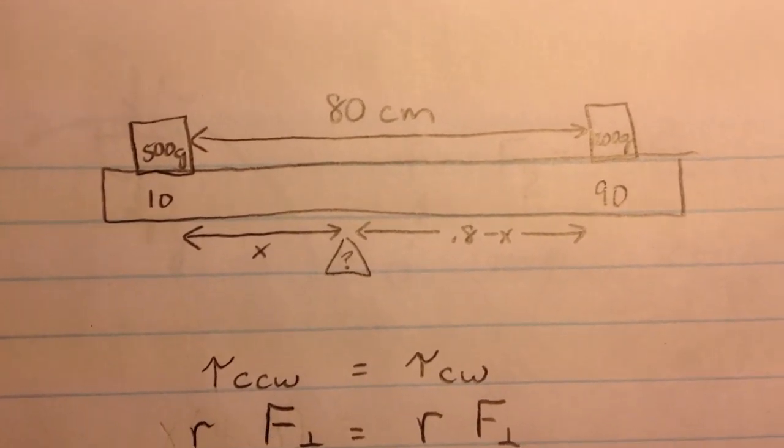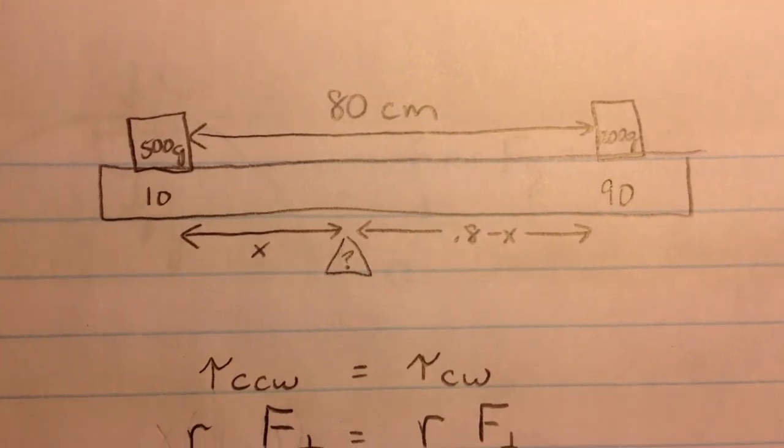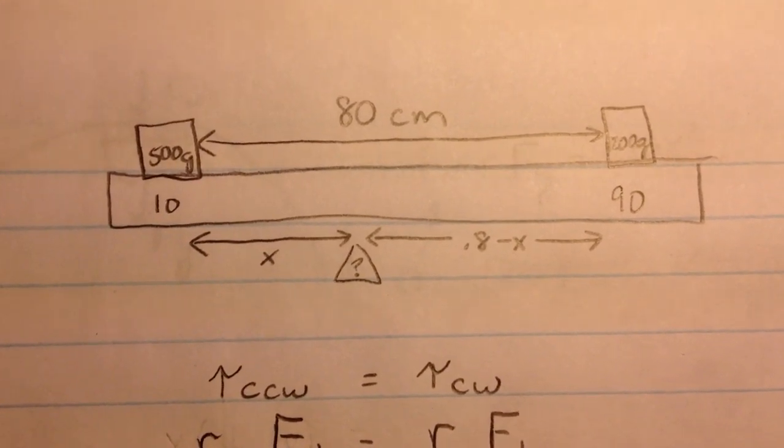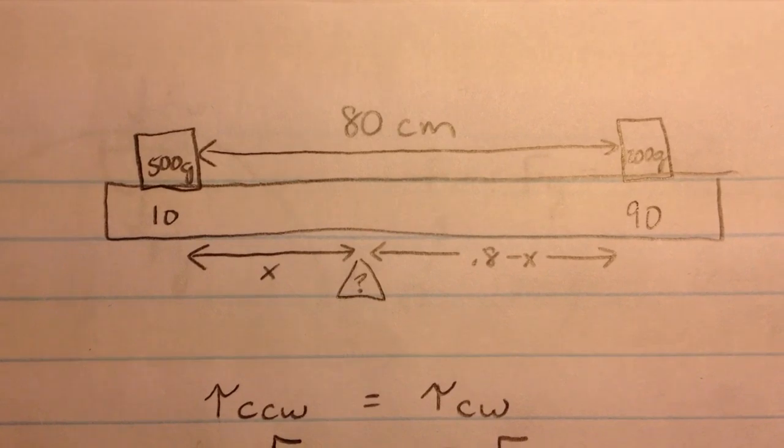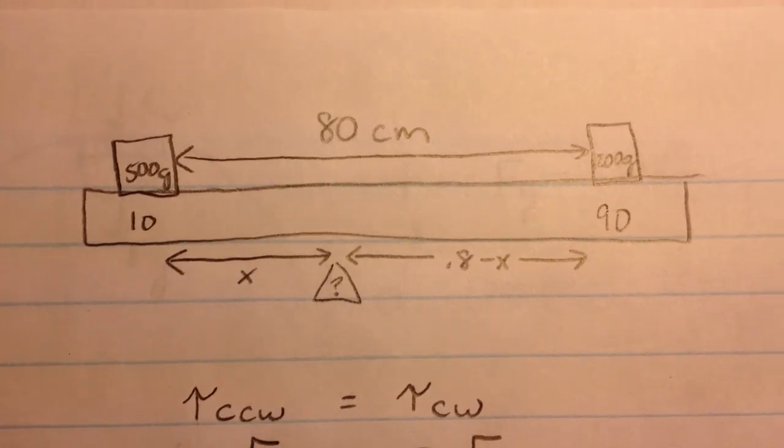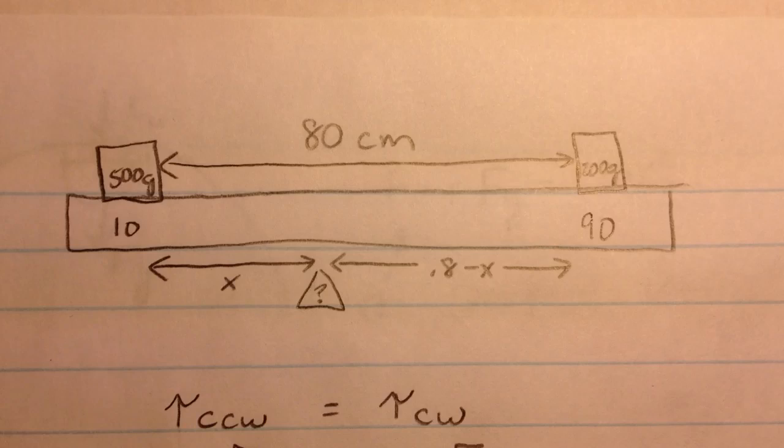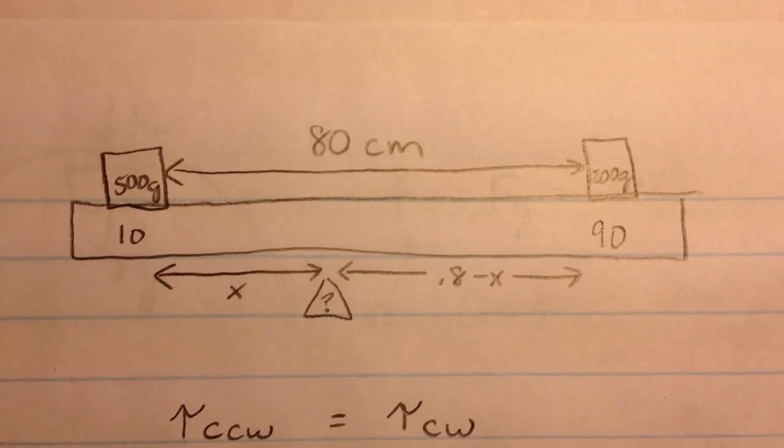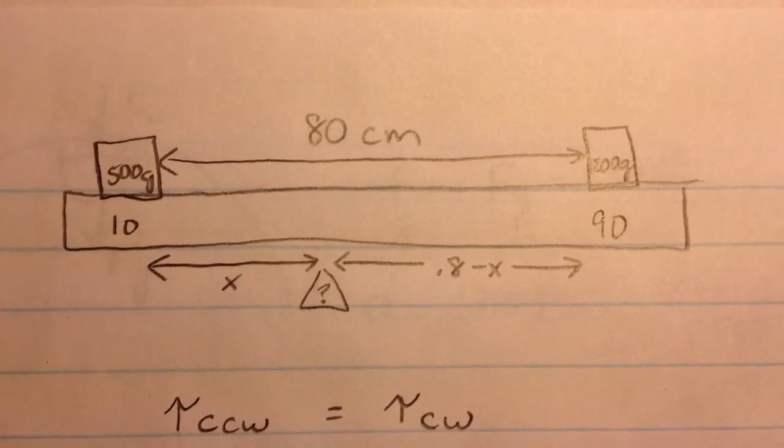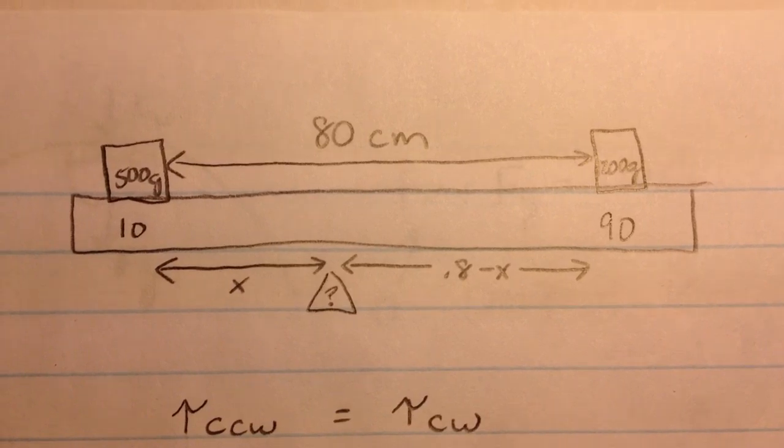So we set it up with the balancing point somewhere in the middle. We don't know how far it is from the 500 gram mass, so we'll call that X. We don't know how far it is from the 200 gram mass and we'll call that 0.8 minus X because the two radiuses added together have to equal 80 centimeters.